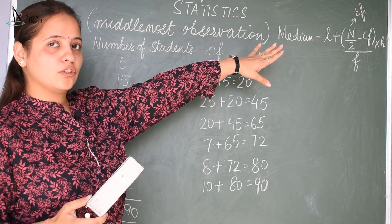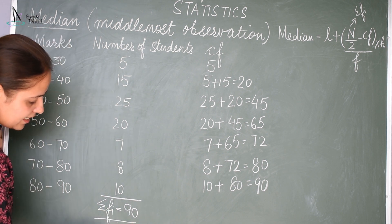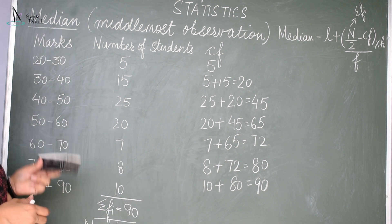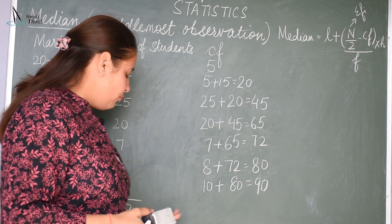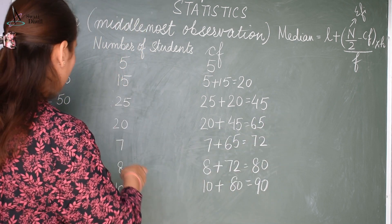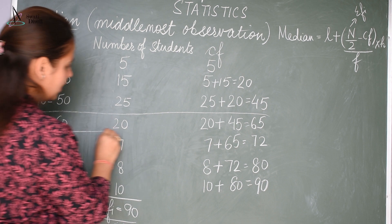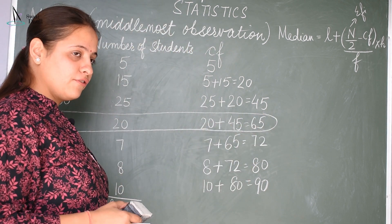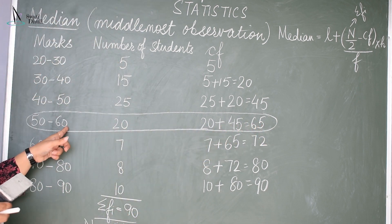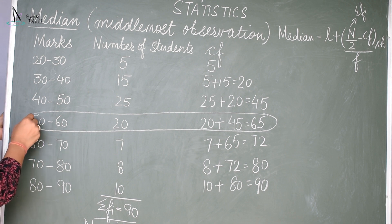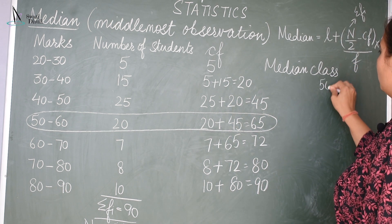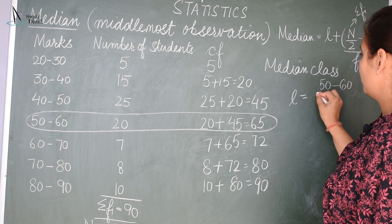Now our motive is to find out the median class. N/2 is 45. You have to look in the column of CF for which value is just greater than 45 — that is 65. So the median class is the corresponding class interval, which is 50 to 60. So the lower limit L is equal to 50.